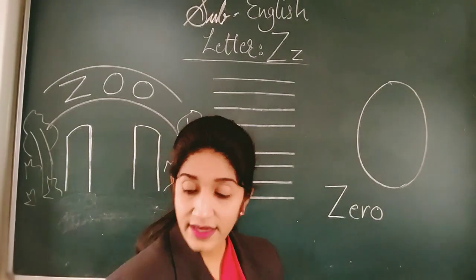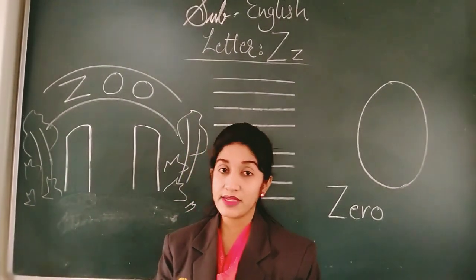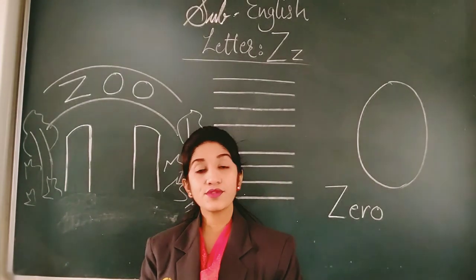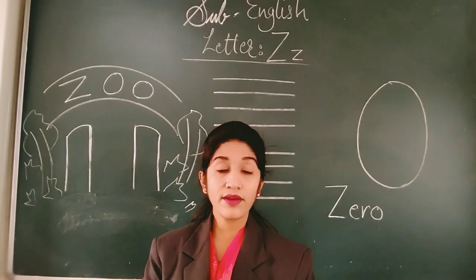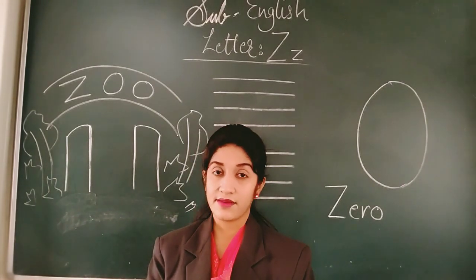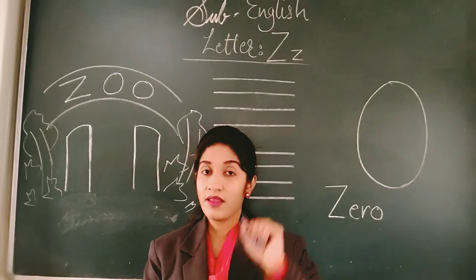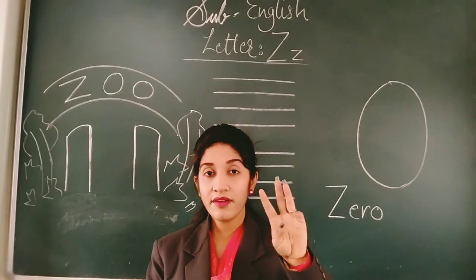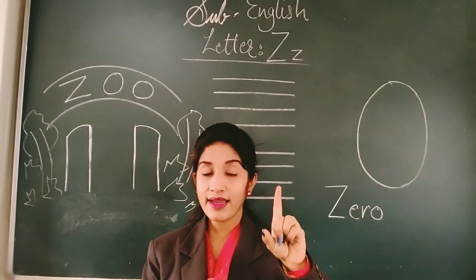So my dear children, now let us see how to write alphabet Z. For that, take out your English notebook — that is your four line notebook — pencil and eraser. I'll be giving you five seconds. Five, four, three, two, and one.